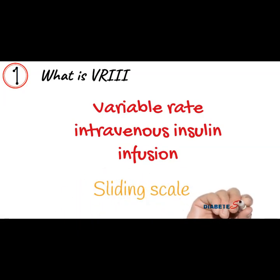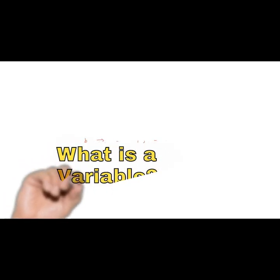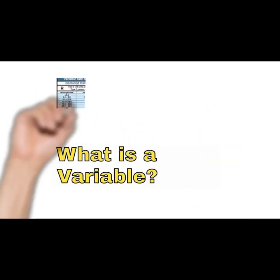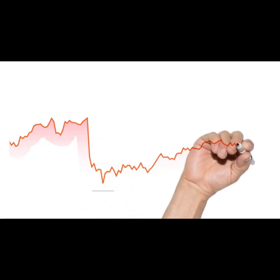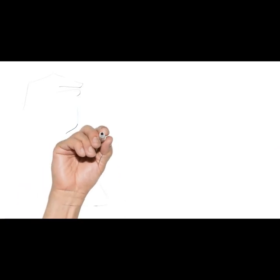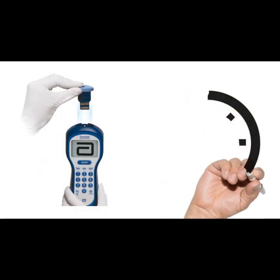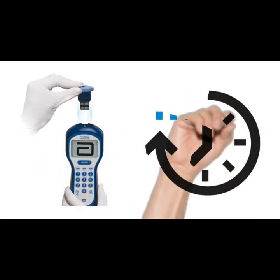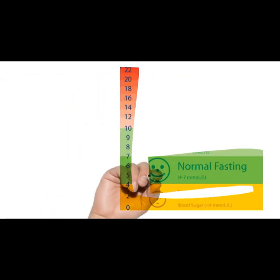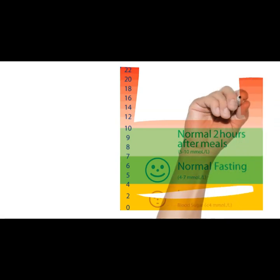VRIII stands for variable rate intravenous insulin infusion. The old term for it was sliding scale insulin infusion. It simply means that the rate of IV insulin infusion will vary according to the blood glucose levels, and as we give IV insulin the blood glucose levels can fluctuate.